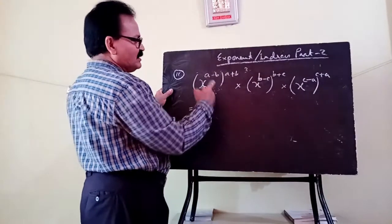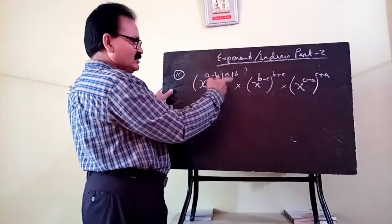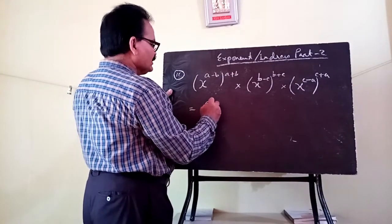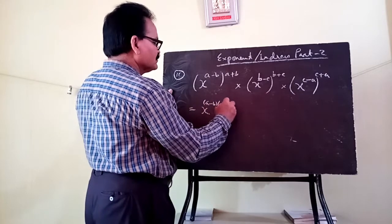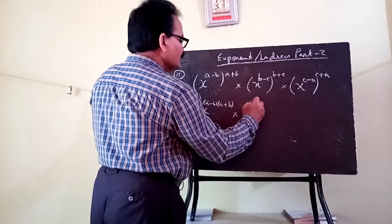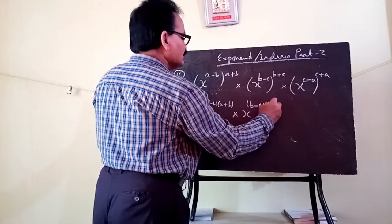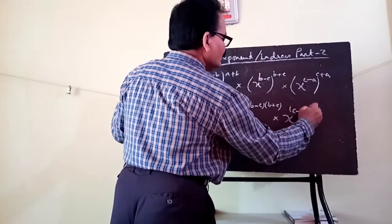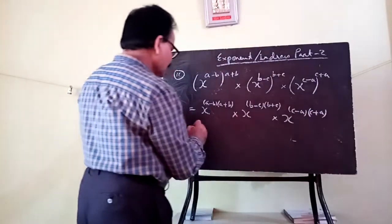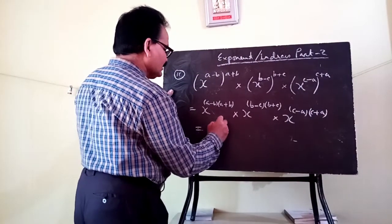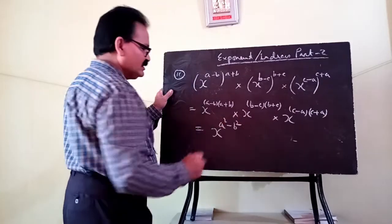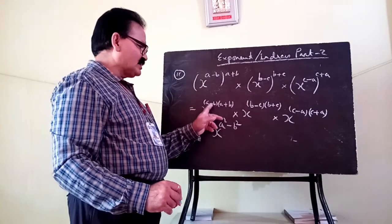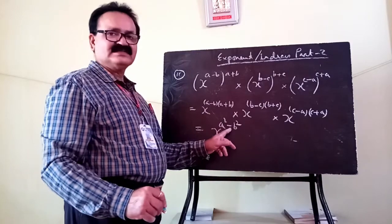Here you just apply the power law by multiplying the exponents. This gives x to the power a minus b into a plus b, into x to the power b minus c into b plus c, into x to the power c minus a into c plus a. Now, a minus b times a plus b equals a squared minus b squared — as you may have studied in class 7.